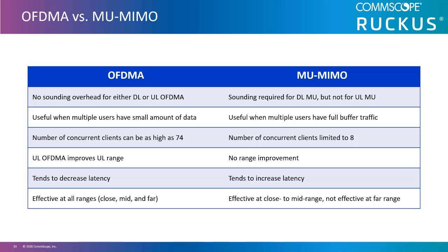So when should I use OFDMA or when should I use multi-user MIMO? This chart shows the strengths and weaknesses of both technologies. These are two complementary multi-user technologies to serve multi-users concurrently. With multi-user MIMO, I need to know where each client is so I can talk to them in two different directions simultaneously. The AP needs to do some work through sounding to figure out their location. The sounding process takes about one millisecond, which is a long time in the Wi-Fi world. If I spend one millisecond figuring out a client's location, I need at least 10 milliseconds to transmit data to get the benefit, otherwise my overhead is too high.